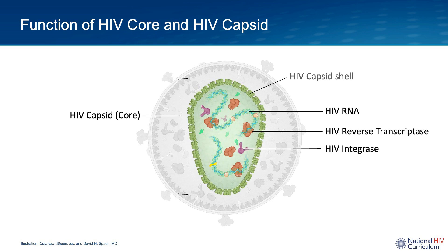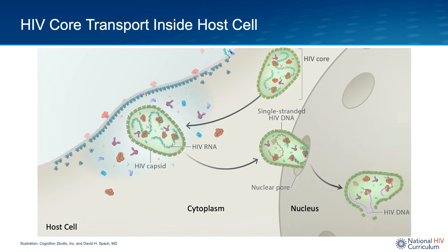This cross-sectional view shows some of the key elements contained inside the capsid shell, including the HIV RNA and the HIV enzymes reverse transcriptase and integrase. This image shows a simplified version of the journey of the HIV core inside the host cell. You can see how the capsid shell safeguards and transports the key viral functional elements into the host cell, through the cytoplasm, and into the nucleus.